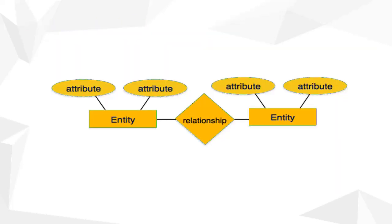ER diagrams can be represented diagrammatically, like a flowchart, where each symbol has its meaning. In ER diagrams there are three things: entities, relationships, and the attributes of entities. Entities are represented in rectangular boxes, relationships are represented in rhombus shapes, and attributes are represented in oval shapes.